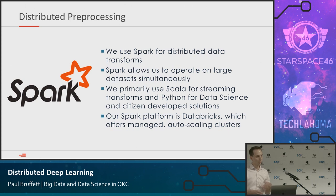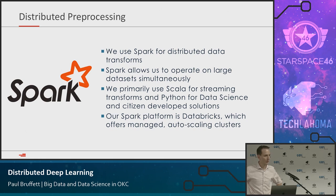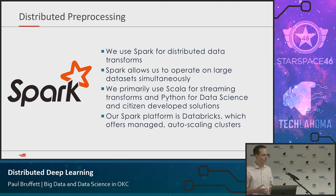Spark builds what's called an execution graph. You specify operators — filter the data, count the data — and it builds all these actions in a graph until you tell it to do something like save it or show it, then it executes that whole graph in memory across a cluster. At Devon we use Azure Databricks, a service for Spark from the guys that started it at Berkeley. It allows us to do transforms on massive data sets — one of our data sets has 48 billion records of subsurface readings. You can't do bulk analysis on that in Oracle. We have Spark clusters with hundreds of CPU cores and terabytes of memory that we stand up, do our analysis, and tear down. We pay by the hour because it's the cloud.